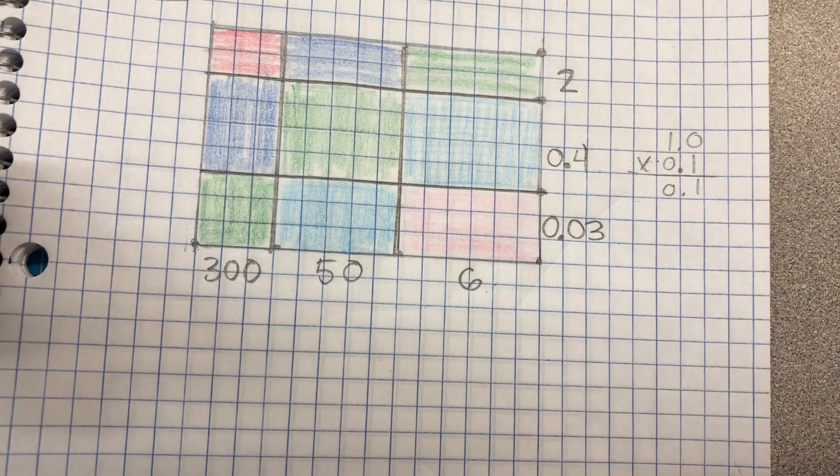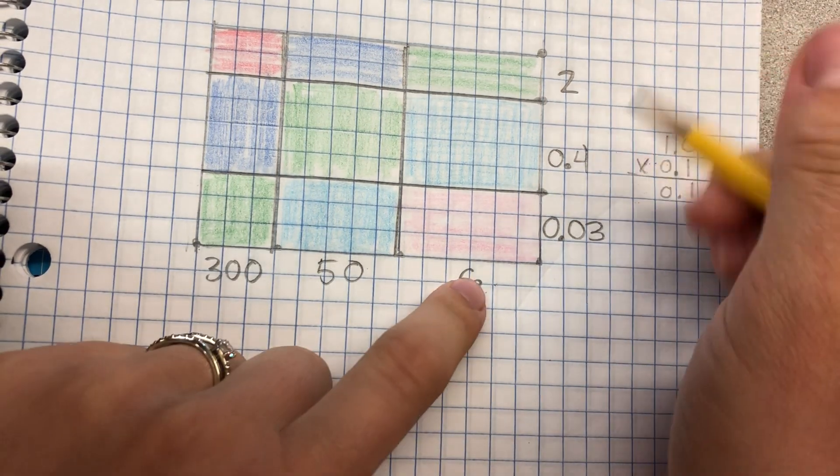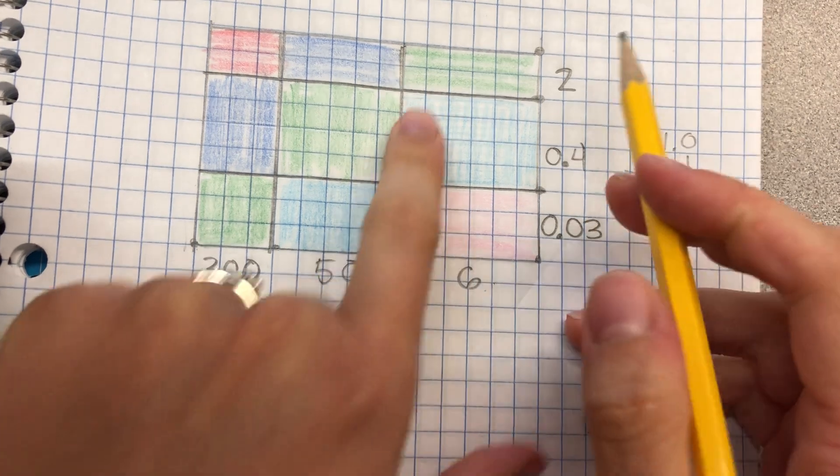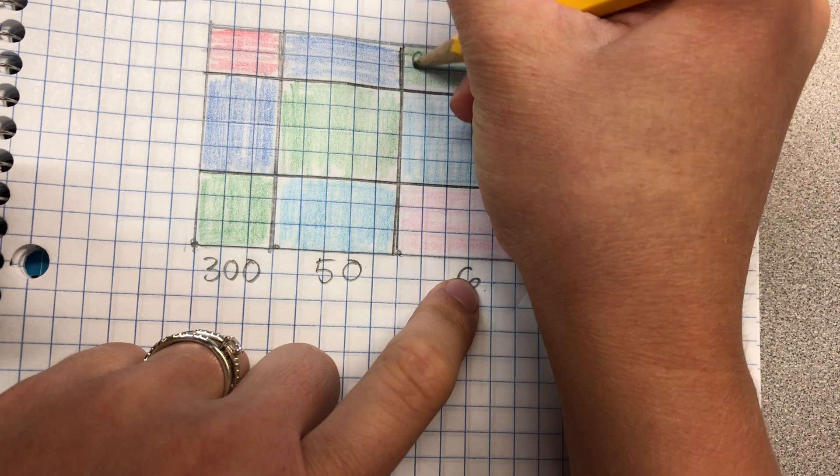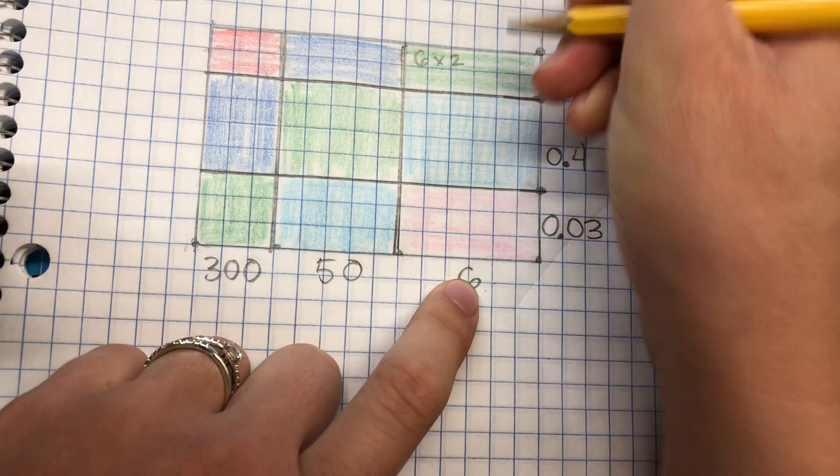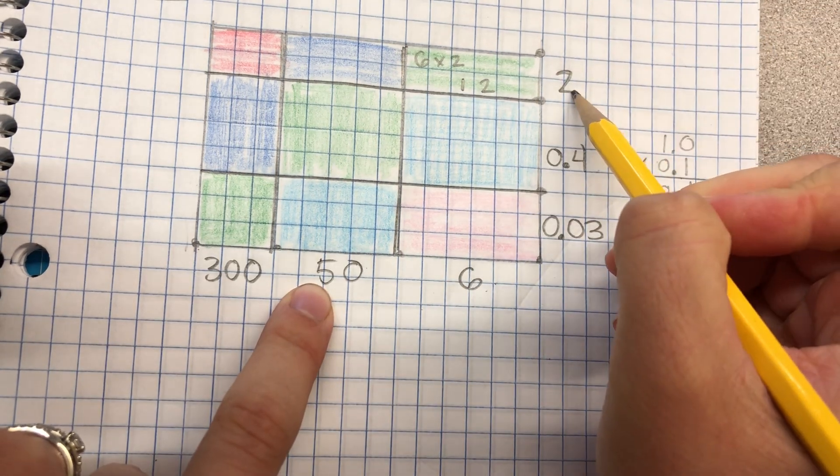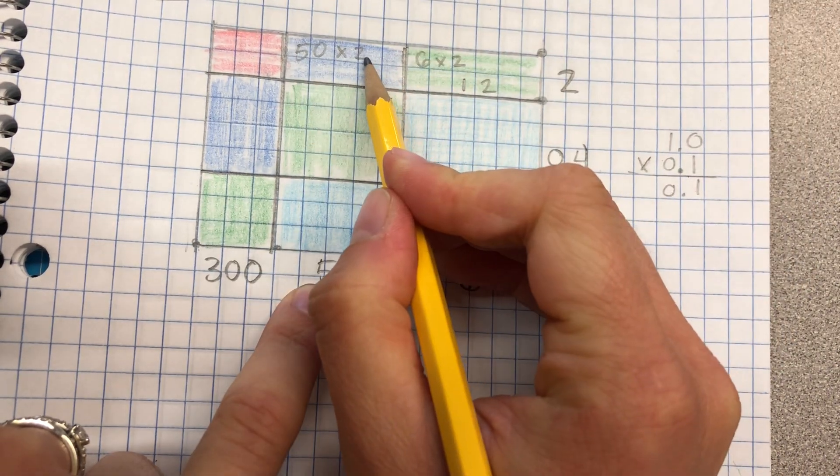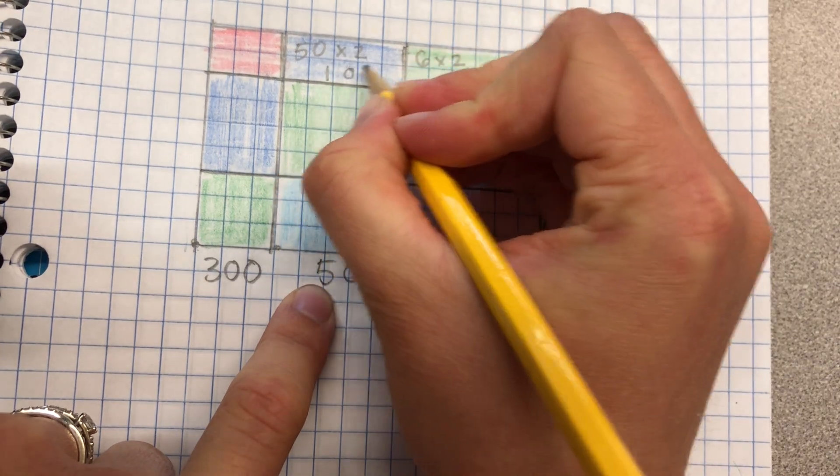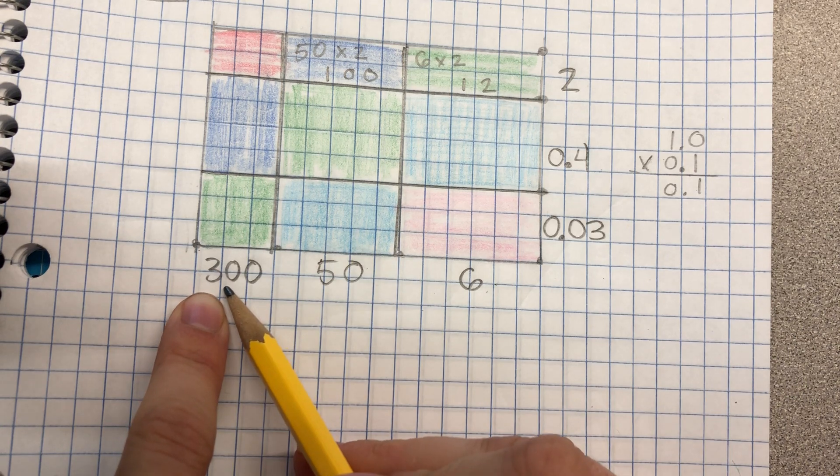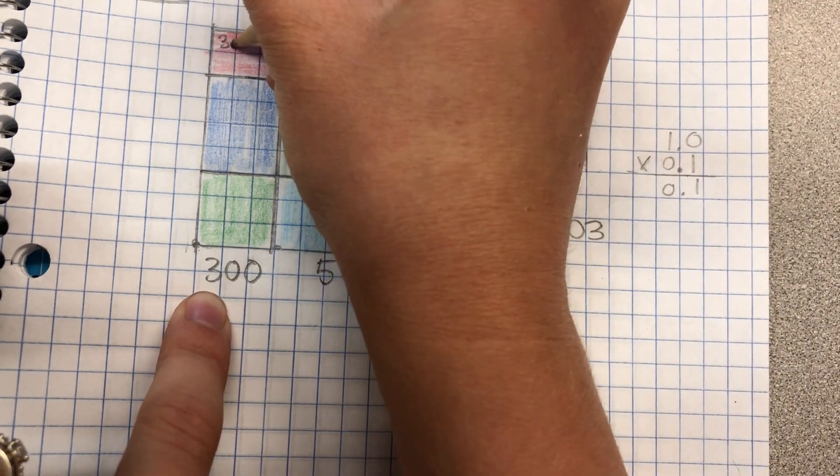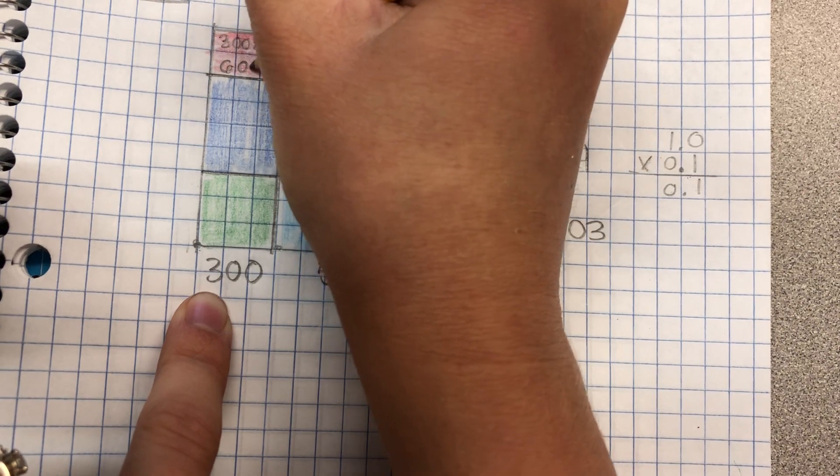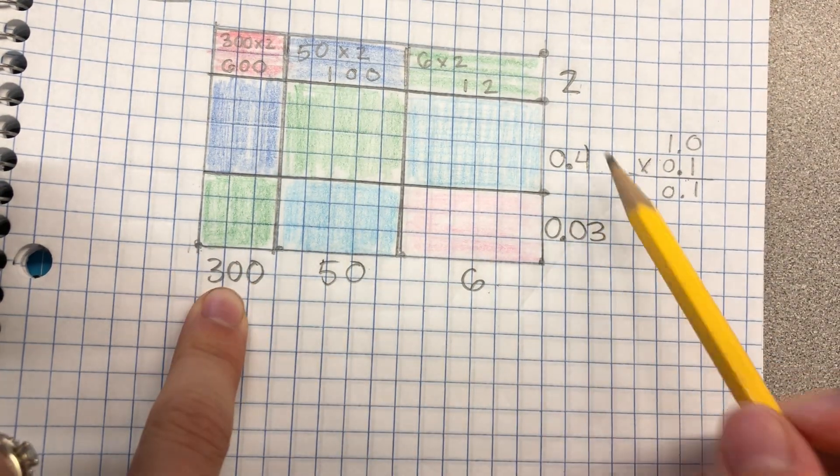So now I'm going to write in my multiplication. You can really start anywhere. Because we're going to do the adding up of the pieces separate. I'm going to start with my unit. So I know 6 taken 2 times gives us 12. I know 50 taken 2 times. So 5 times 2 is 10. 10 tens is 100. Now I multiply 300 times 2. And 3 times 2 is 6 hundreds.